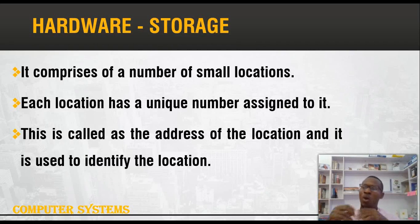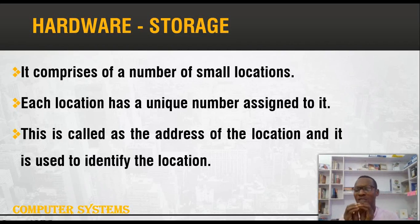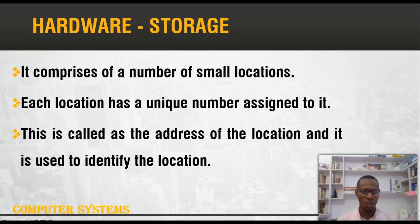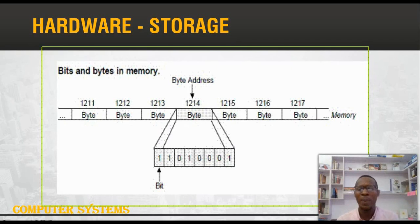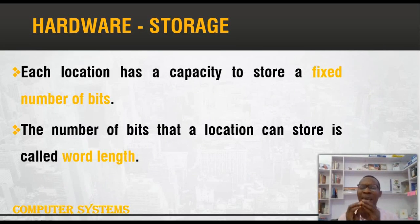Each memory location has a unique number assigned to it, just like our houses have plot numbers or street numbers to help us identify buildings. Likewise, memory locations have unique numbers called addresses. These addresses are used to identify where data is stored so it can be retrieved. As shown on our screen, memory locations are in partitions, each with an address such as 12, 12-11, 12-13, and each location holds 8 bits of data.